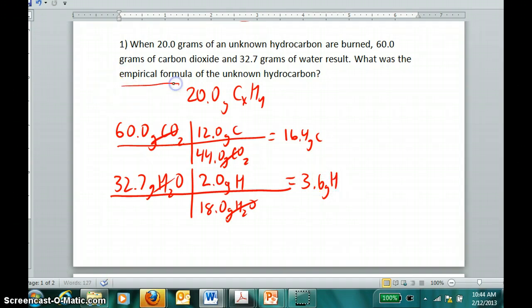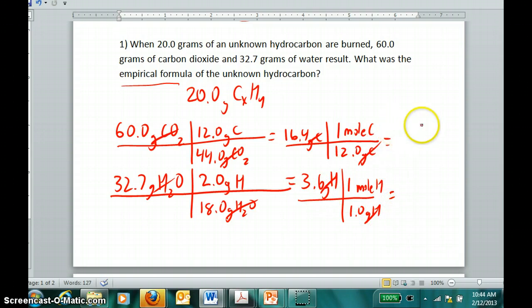If we want to know the empirical formula, we don't use mass ratios, we use molar ratios. I can convert this mass of carbon to moles of carbon and this mass of hydrogen to moles of hydrogen. One mole of carbon atoms is equal to 12 grams of carbon, and one mole of hydrogen atoms is equivalent to one gram of hydrogen. Therefore, I have 1.36 moles of carbon in my original 20 grams and 3.6 moles of hydrogen.